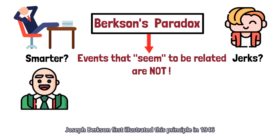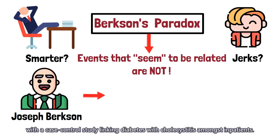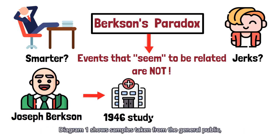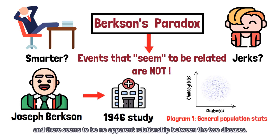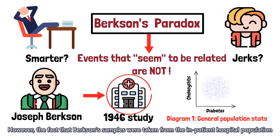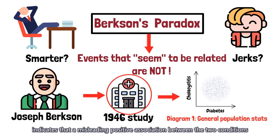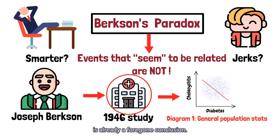Joseph Berkson first illustrated this principle in 1946, with a case-control study linking diabetes with cholecystitis amongst inpatients. Diagram 1 shows samples taken from the general public, and there seems to be no apparent relationship between the two diseases. However, the fact that Berkson's samples were taken from the inpatient hospital population indicates that a misleading positive association between the two conditions is already a foregone conclusion.